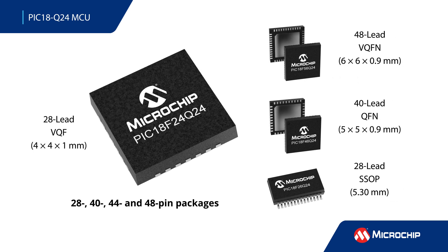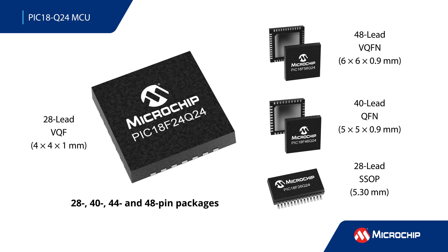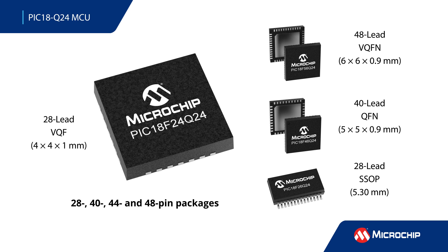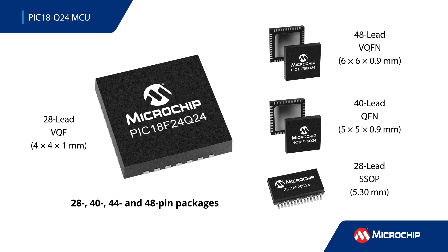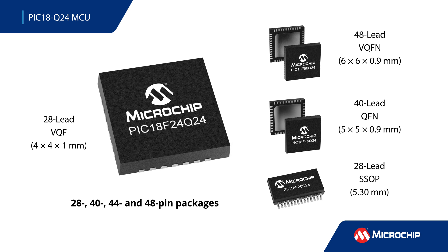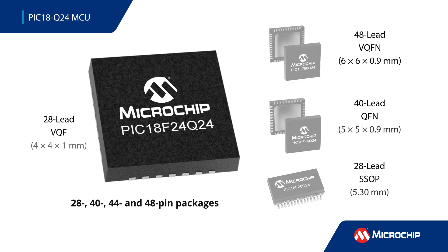PIC18 Q24 MCUs support a clock input up to 64 MHz and are offered in 28-48 pin packages, with up to 64 KB of program flash and 4 KB of data SRAM.